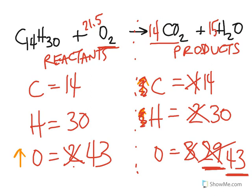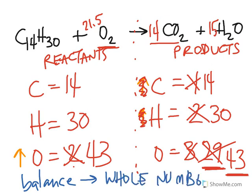But I cannot leave, right? So when I balance equations, I must have whole numbers. So, if I have a fraction like this, multiply everything by 2. So I'm going to multiply 21.5 by 2. And what am I going to get? I'm going to get 43.